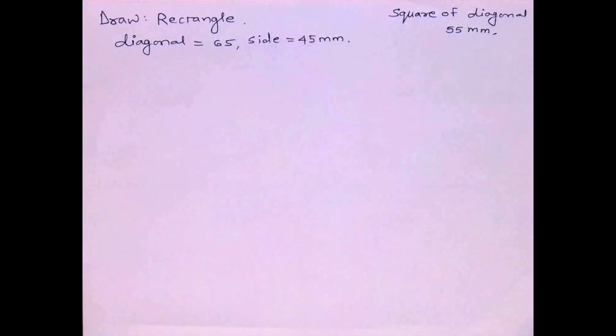Welcome to technical drawing. Today we will draw a rectangle where diagonal is 65 and one side is 45.